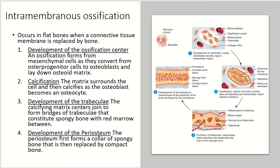Looking at the steps for intramembranous ossification, this occurs in flat bones when a connective tissue membrane is replaced by bone. The first step is the development of the ossification center, which forms from mesenchymal cells as they're converted from osteoprogenitor cells into osteoblasts that lay down the osteoid matrix, that bone matrix. The second step is calcification, when the matrix surrounds the cell and calcifies as those osteoblasts become osteocytes.